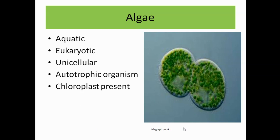Then algae. Algae are aquatic, eukaryotic, unicellular, autotrophic organisms with chloroplasts present. For example, Chlorella and Chlamydomonas.